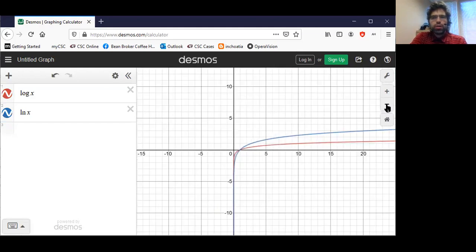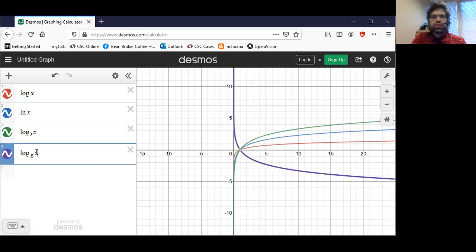They look basically the same. Every logarithm looks basically the same. Well, that's not quite true. If we had a base that was less than one, we'd get a different graph.